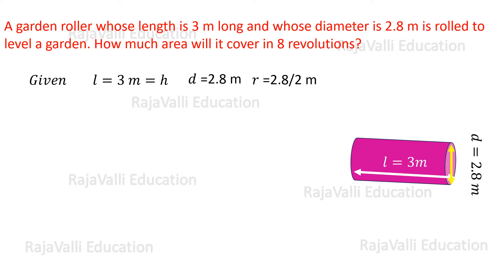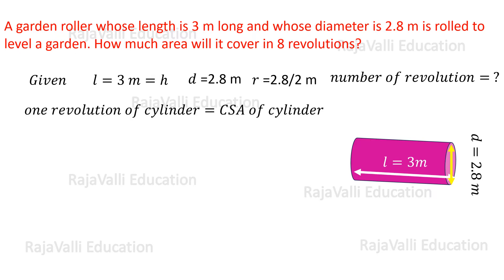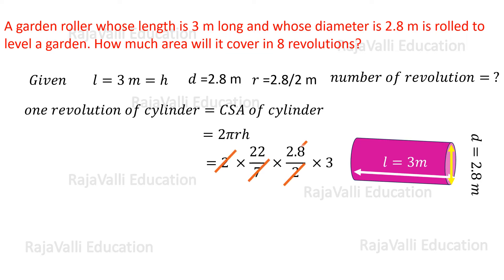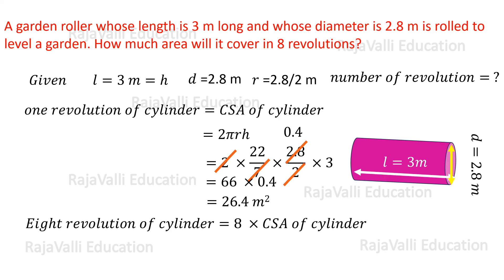So first we have to find out the area for 1 revolution of the cylinder, which is equal to the CSA of the cylinder. CSA of the cylinder is equal to 2πrh. Substituting the values of π, r, and h and simplifying, we get 26.4 meter square. This is the area of 1 revolution of the cylinder, but we have to calculate for 8 revolutions.